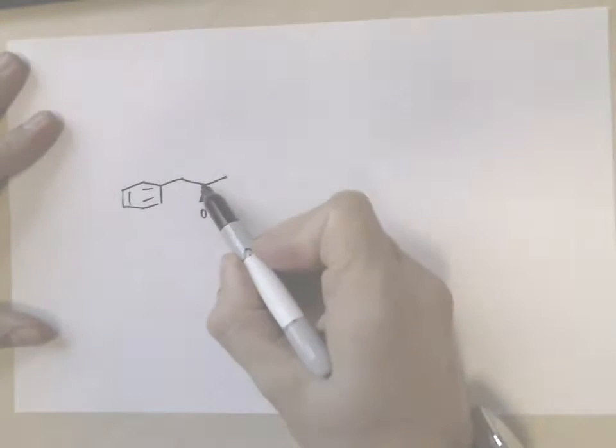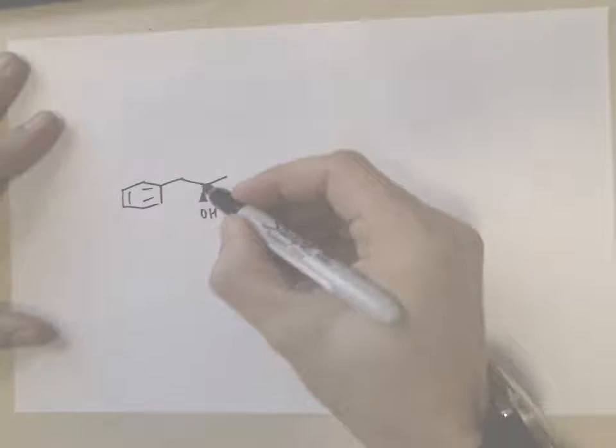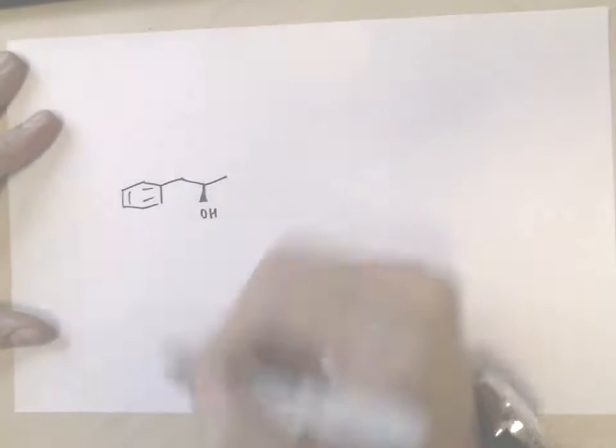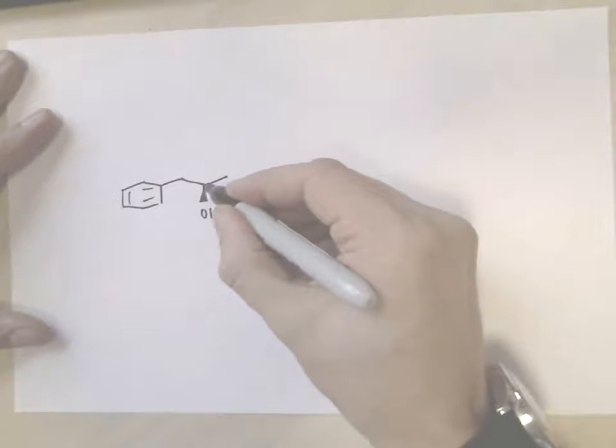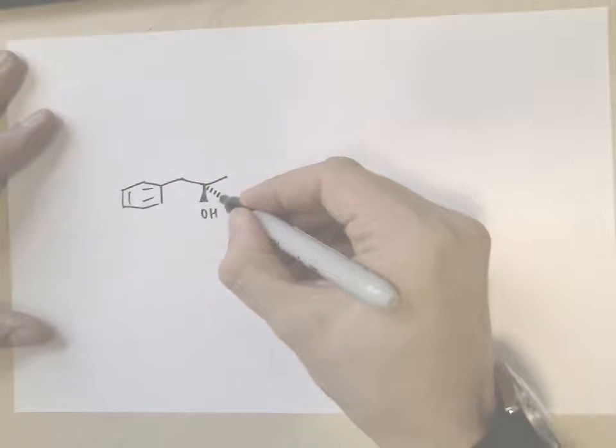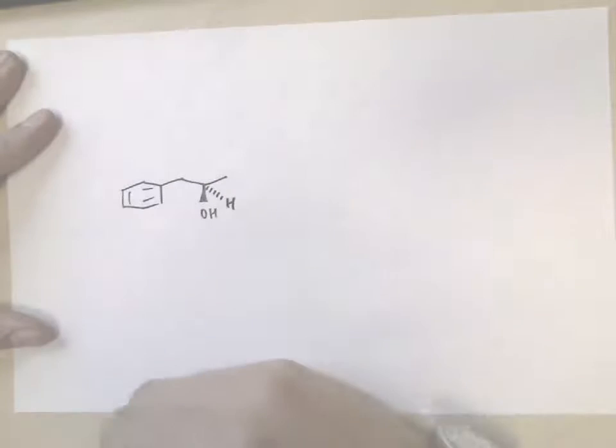Remember, this carbon has four bonds, but we've only drawn three of them - two in the plane of the page, one coming out of the page, so we must draw the one that's going back. If you're not told otherwise, you assume that it's hydrogen.